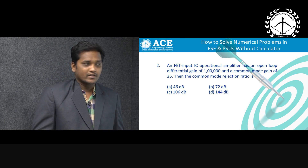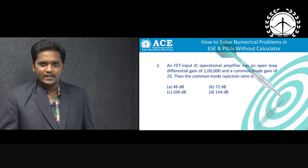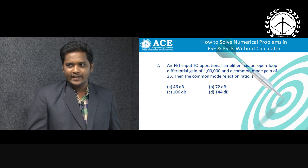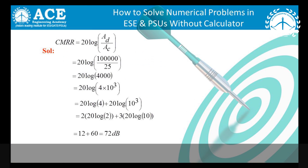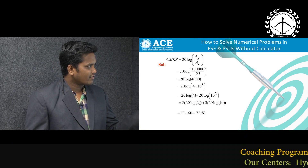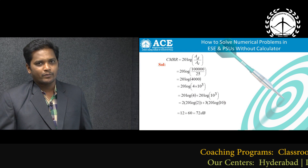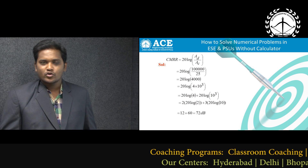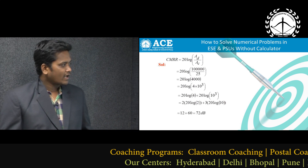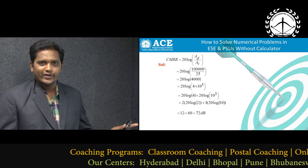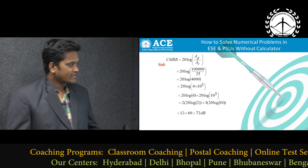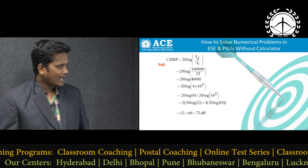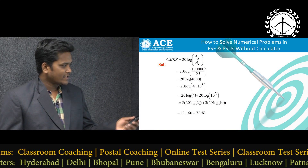Next is a previous IES problem in analog electronics: calculate the common mode rejection ratio (CMRR) in decibels. CMRR is defined as the ratio of differential gain to common mode gain. Differential gain is given as 1,00,000 (1 lakh) and common mode gain is 25, so CMRR = 1,00,000/25 = 4000. Write 4000 as 4 × 10³. Then 20 log 4 + 20 log 10³ = 2 × 20 log 2 + 3 × 20 log 10 = 12 + 60 = 72 dB.